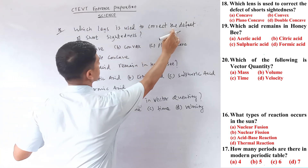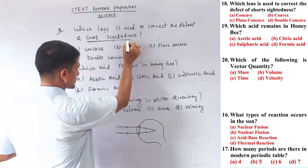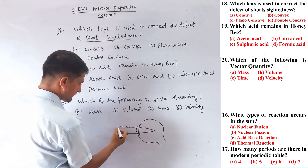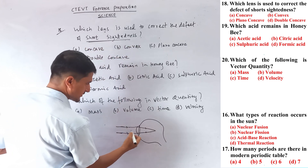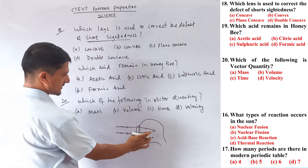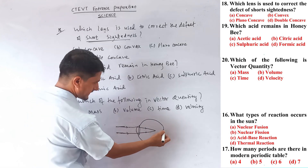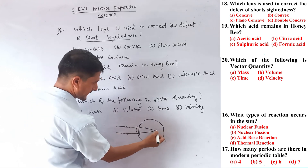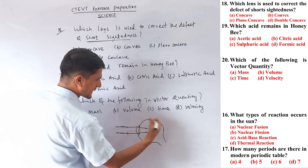Question number eighteen: which lens is used to correct the defect of short-sightedness? Short-sightedness means a person can see nearby objects but not distant ones. A concave lens is used to correct this defect.